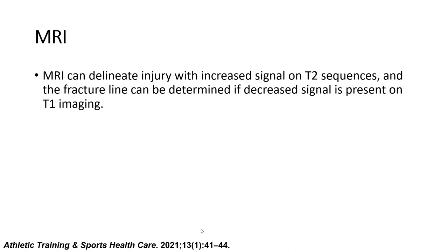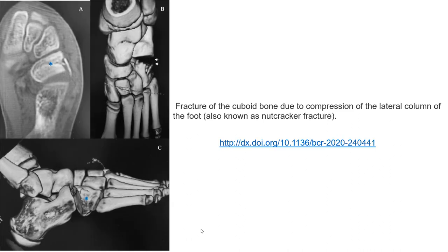MRI can delineate injury with increased signal on T2 sequences, and the fracture line can be determined if decreased signal is present on T1 imaging. This case shows a fracture of the cuboid bone due to compression of the lateral column of the foot, which is known as the nutcracker fracture.